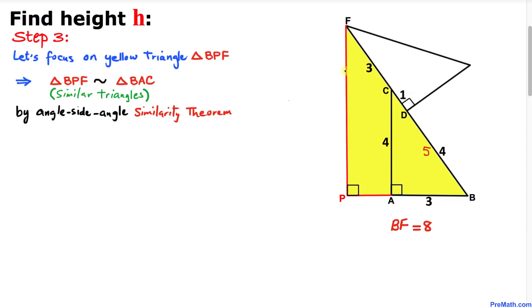Now let me call this height PF as height h. We have this proportion: h over BF equals AC divided by BC. Let's fill in the blanks. h divided by BF, in our case, is 8.